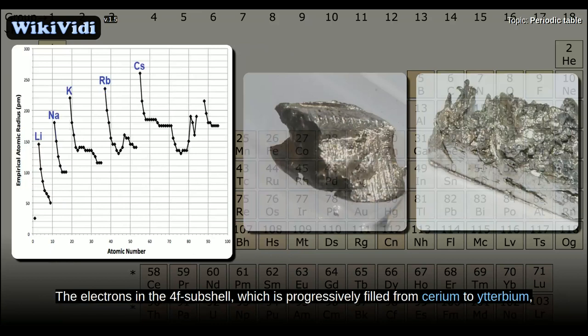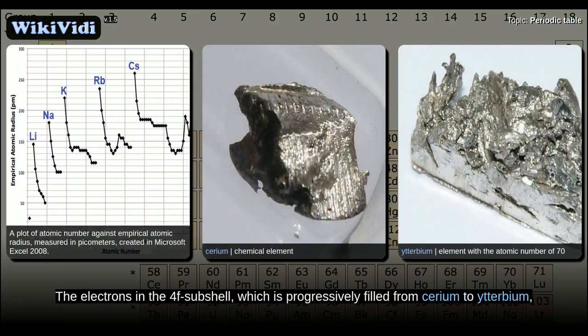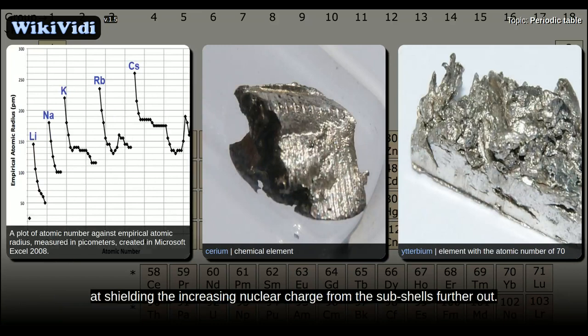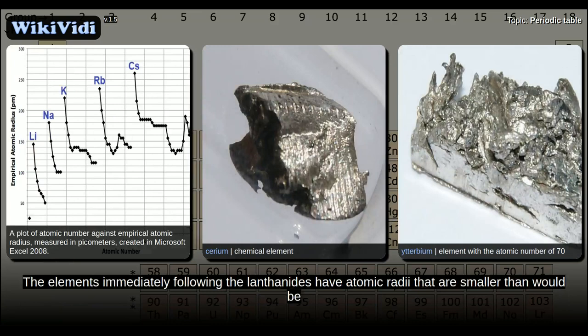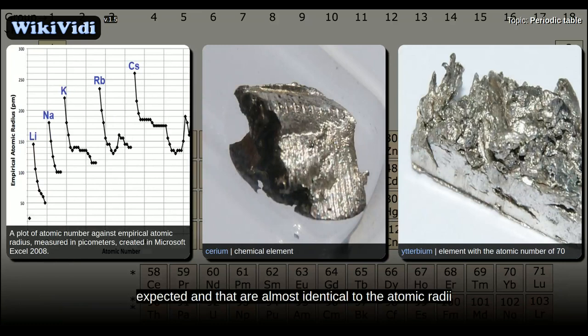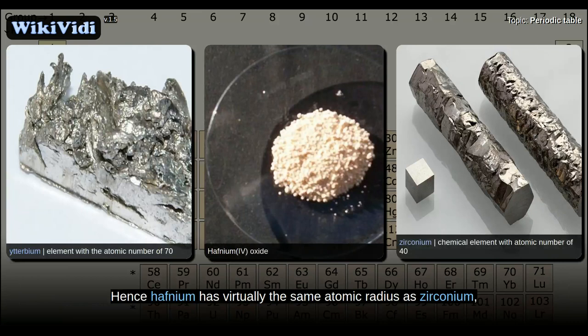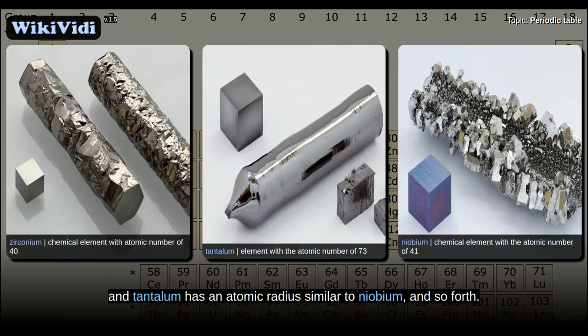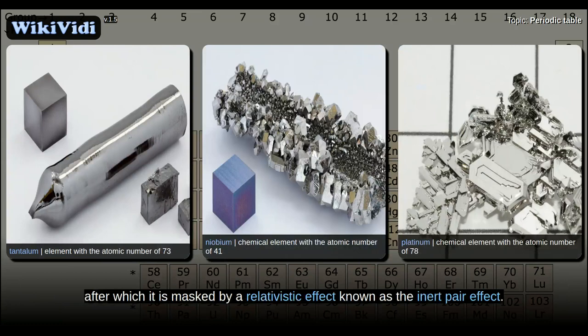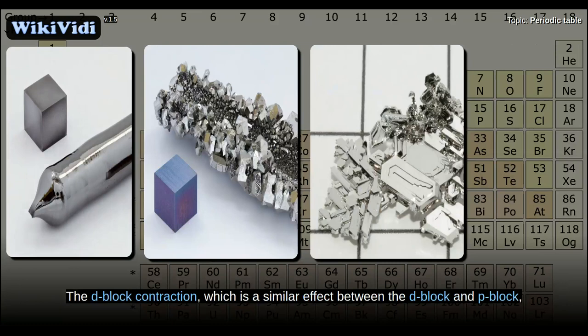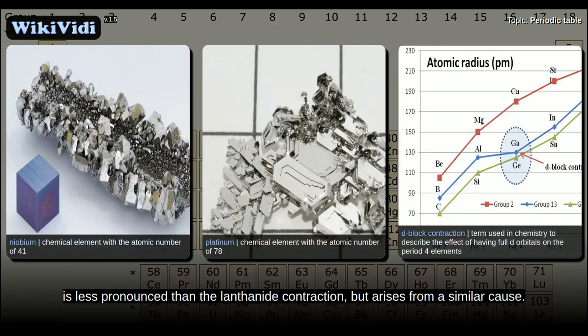The electrons in the 4f subshell, which is progressively filled from cerium to ytterbium, are not particularly effective at shielding the increasing nuclear charge from the subshells further out. The elements immediately following the lanthanides have atomic radii that are smaller than would be expected and almost identical to those of the elements immediately above them. Hence, hafnium has virtually the same atomic radius as zirconium, and tantalum has an atomic radius similar to niobium. This is known as the lanthanide contraction. The effect is noticeable up to platinum, after which it is masked by a relativistic effect known as the inert pair effect. The D-block contraction is a similar but less pronounced effect between the D-block and P-block.